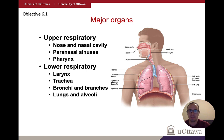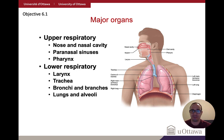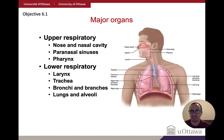The upper respiratory system includes the nose and nasal cavity, sinuses, and pharynx. Once past the pharynx, down into the larynx, this is called the lower respiratory system, which includes the larynx, trachea, bronchi, and their various branches, along with the alveoli, which make up the lungs.